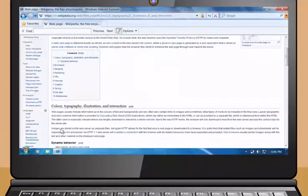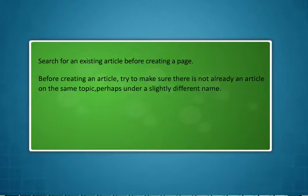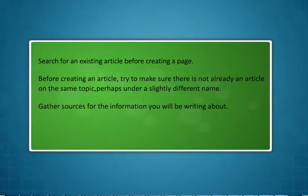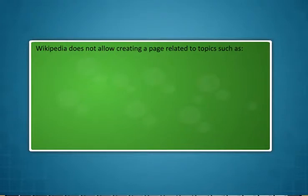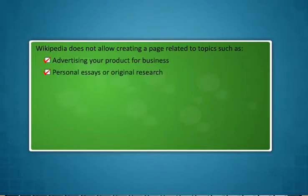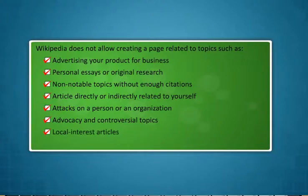Type in something or make changes to the text you find there. If you do not see the Edit option at the top of the page, it means that the page is protected from editing, probably because of high incidence of malicious changes. If you are making small changes in one part of the article, click on the Edit link adjacent to that section. This will allow you to make changes in one part of the article without opening the whole article. Now briefly explain your changes in the Edit Summary box at the bottom of the page. Preview your changes by clicking on Show Preview button. Once you are satisfied with your work, hit the Save Page button. Gather sources for the information you will be writing about. Detailed instructions on ways of sourcing articles can be found on the WPCITE page of Wikipedia.